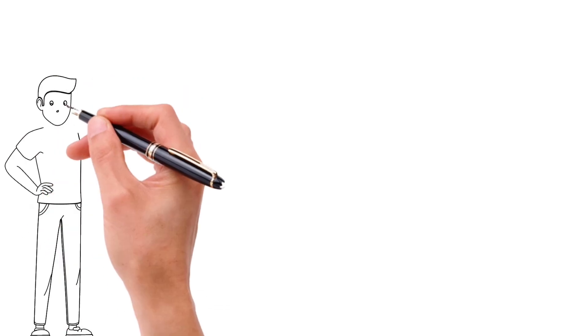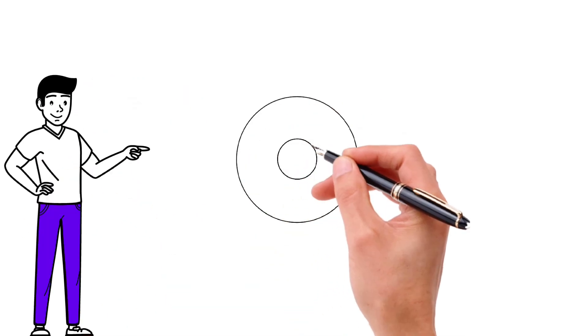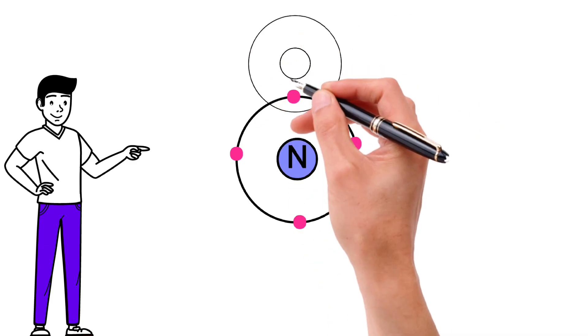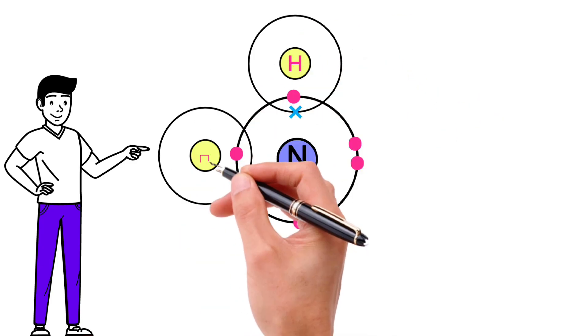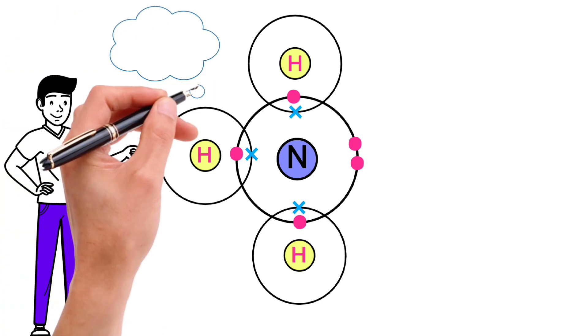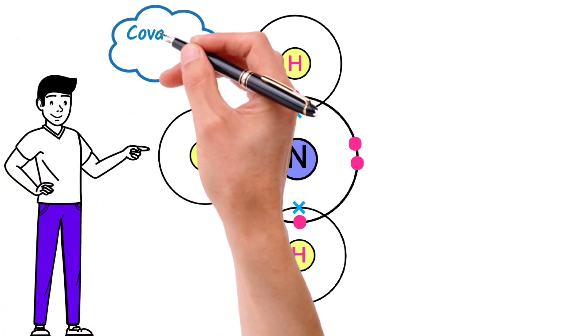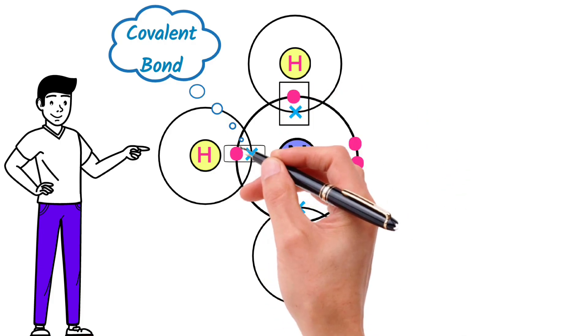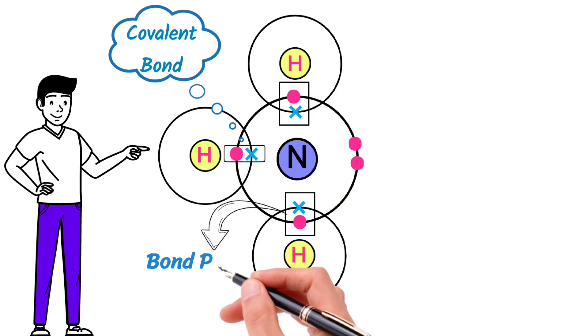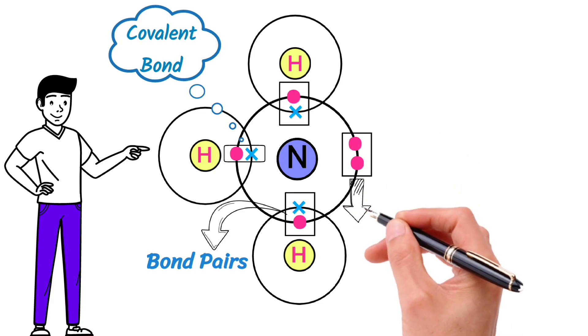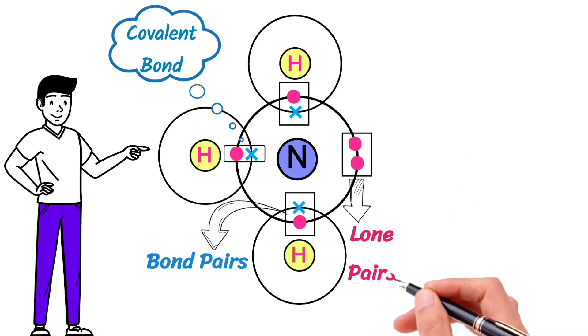I have an example for you. Nitrogen has 5 valence electrons and needs 3 more electrons to become stable. So nitrogen shares its 3 electrons with 3 hydrogen atoms by mutual sharing. And the bond formed due to mutual sharing of electrons known as covalent bond. The electrons that pair up to form covalent bond are known as bond pairs. And the pair of electrons that do not involve in bonding, known as lone pair of electrons.